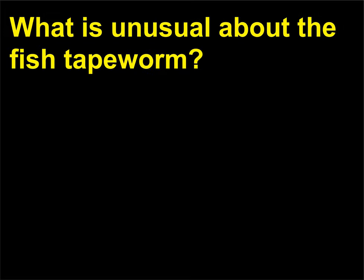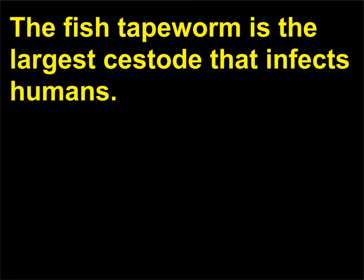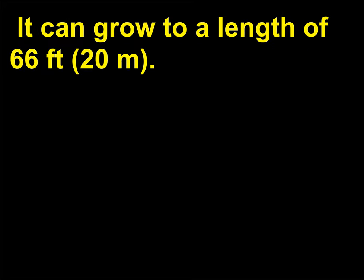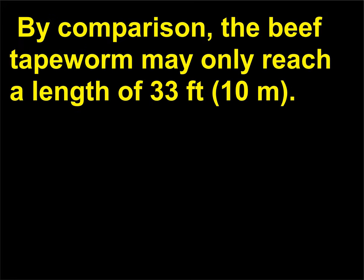What is unusual about the fish tapeworm? The fish tapeworm is the largest cestode that infects humans. It can grow to a length of 66 feet (20 meters). By comparison, the beef tapeworm may only reach a length of 33 feet (10 meters).